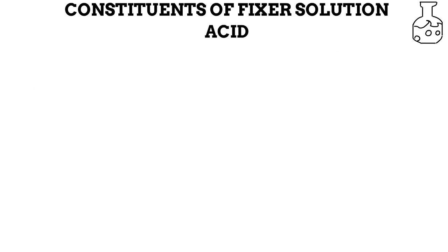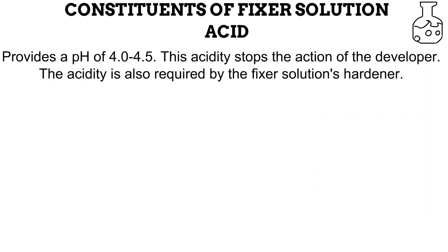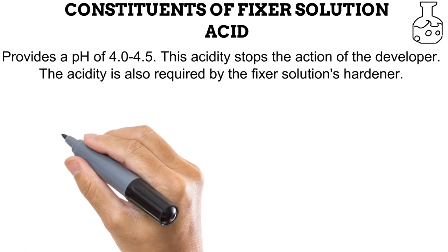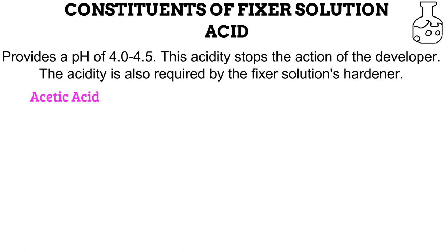Another constituent of the fixer solution is acid. An acidic environment is needed by the fixer solution for two important reasons. First, because the developer needs an alkaline environment to function, the acidic environment of the fixer solution will ensure all activity of leftover developer on the film is stopped as soon as the film is placed in the fixer container. Secondly, the hardener used in a fixer solution requires an acidic environment to function. Acetic acid is commonly used to provide this acidic environment of between pH 4.0 and 4.5.